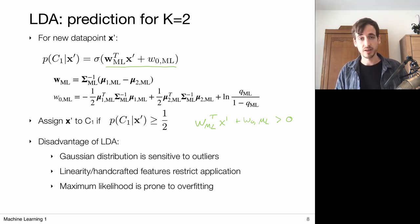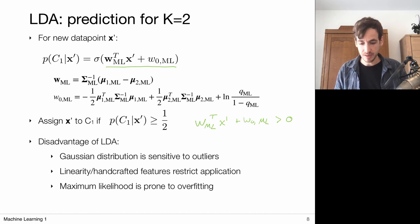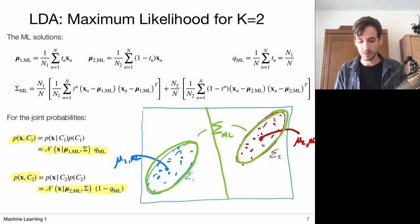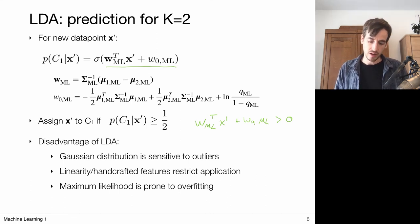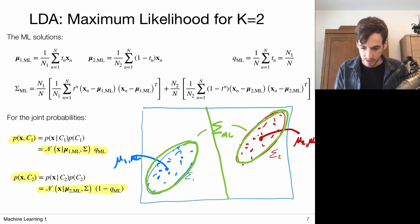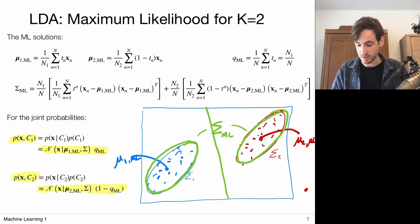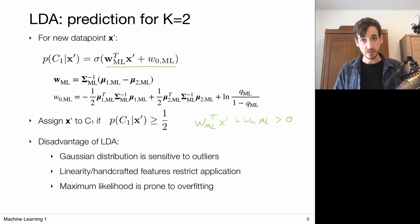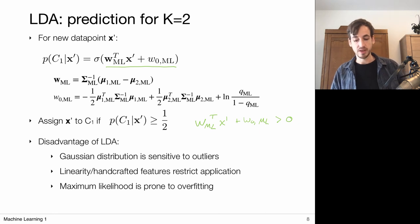There are clear advantages to linear discriminant analysis: the model parameters can be derived analytically in closed form, we obtain a full parametric probabilistic description of the data, and the decision rules are very simple via the linear model. A key disadvantage is that Gaussian distributions are very sensitive to outliers — a single outlier in the red class can shift the mean and distort the covariance matrix.